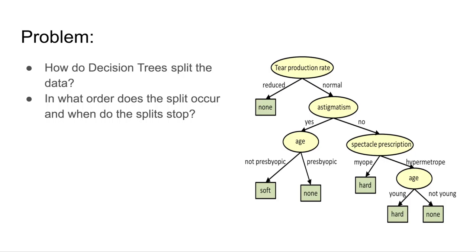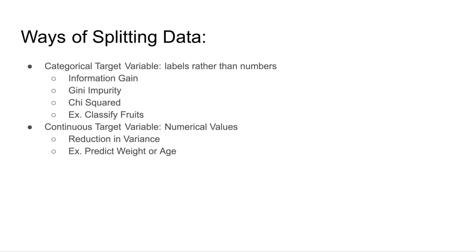There are mathematical ways to calculate whether a split is preferred or not in a decision tree. There are four main ways of splitting data: information gain, Gini impurity, chi-squared, and reduction in variance.